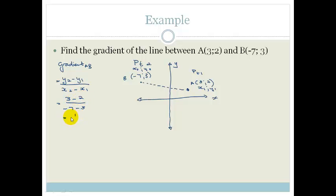3 minus 2 is 1, over -7 minus 3 is -10. Therefore, the gradient m from A to B is going to be -1/10. And what do we know about gradients? We know that if it's going up to the left, it should be a negative gradient. So that looks about right.